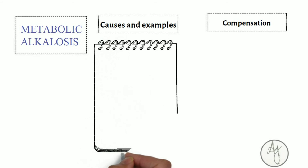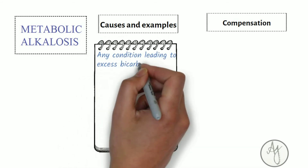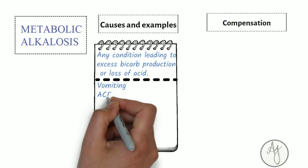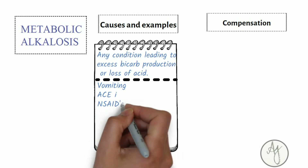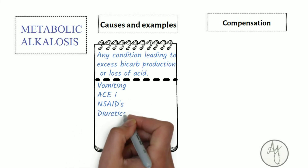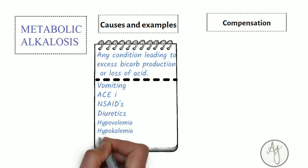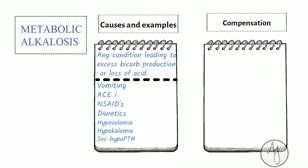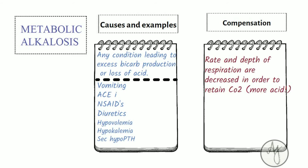Coming to metabolic alkalosis — it can happen in any condition that leads to an increase in bicarb or loss of acids in the form of H+ ions. This occurs in vomiting, ACE inhibitor use, NSAIDs, diuretics, hypovolemia, hypokalemia, and secondary hypoparathyroidism. To compensate, the rate and depth of respiration are decreased — in metabolic alkalosis we try to make the body more acidotic, so we retain carbon dioxide by breathing more shallowly.